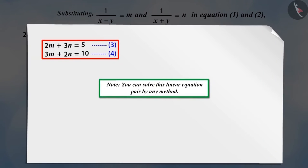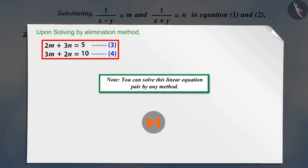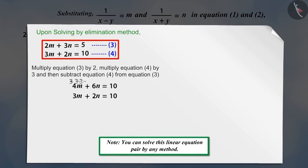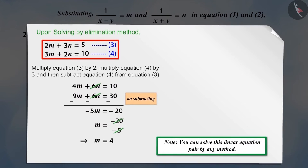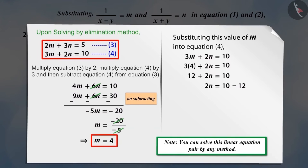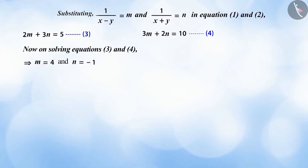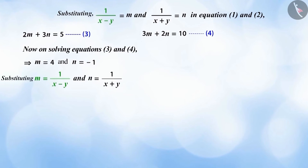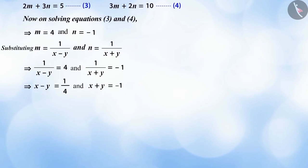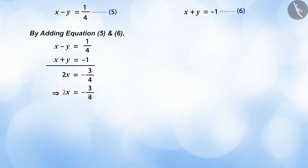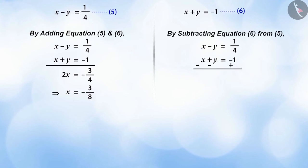We can solve this pair of linear equations by any of the methods. Pause the video and try to solve these equations. On solving the equations, we get m = 4 and n = −1. On solving further, we get equations five and six. On adding equations five and six, we get x = −3/8.